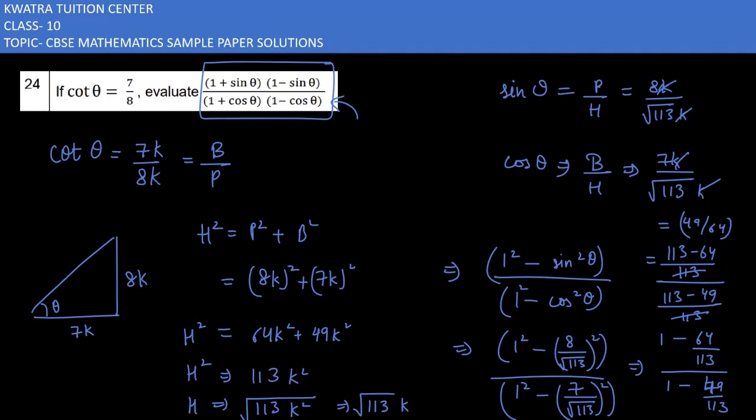So yes, the answer is 49/64 for the expression (1 + sin θ)(1 - sin θ) over (1 + cos θ)(1 - cos θ). Note this down and we'll move to the next question number 25.